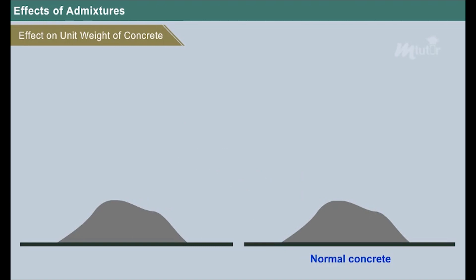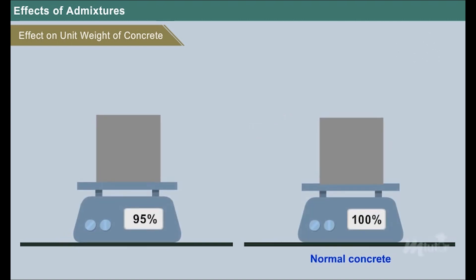Effect on unit weight of concrete: Air entrainment admixtures when added to the concrete decrease the solid material by 5% of its weight. Hence the weight of this concrete is reduced by 5% of the weight of normal concrete. The origin of lightweight concrete is based on this concept.